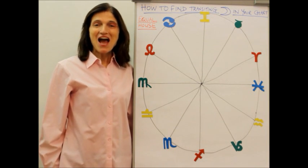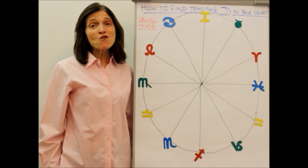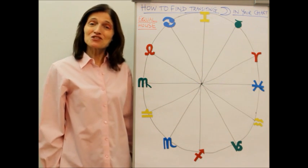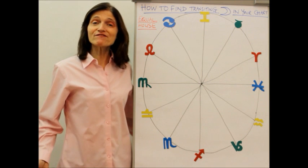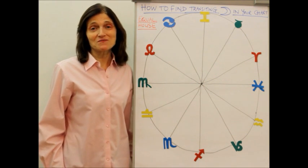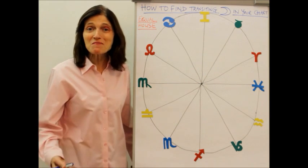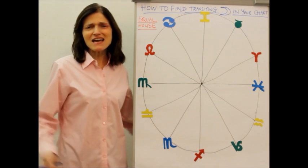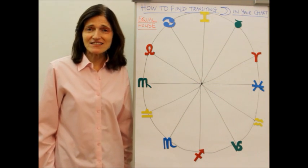Hello everybody, I've been asked by so many of you for months, if not years, to do a video on how to find the transiting moon in your chart. Every month, twice a month, I talk about the new moon and the full moon, and many of you say how on earth do I find it?